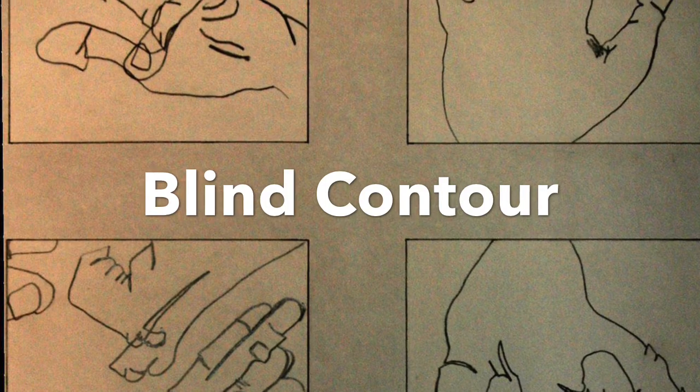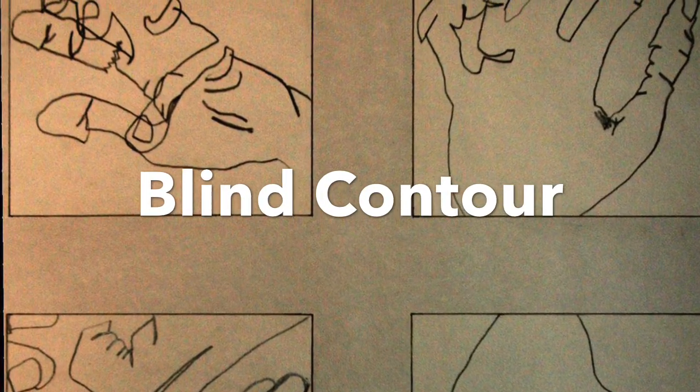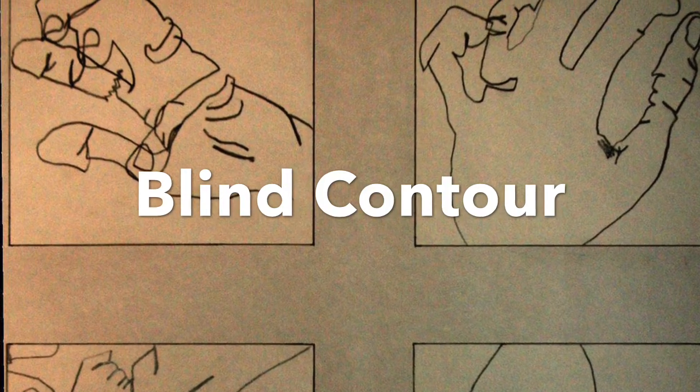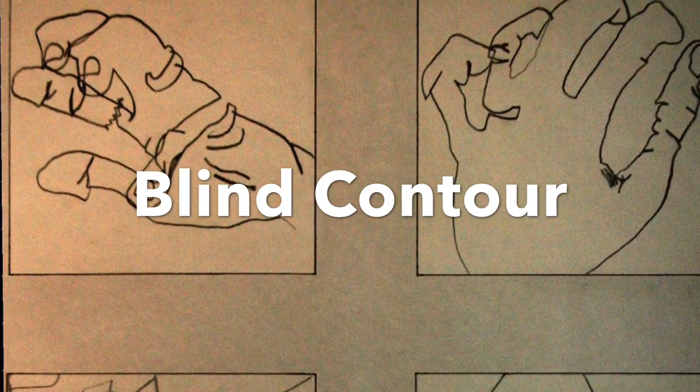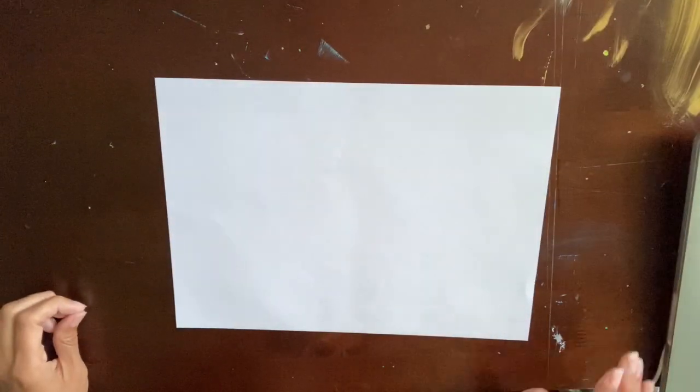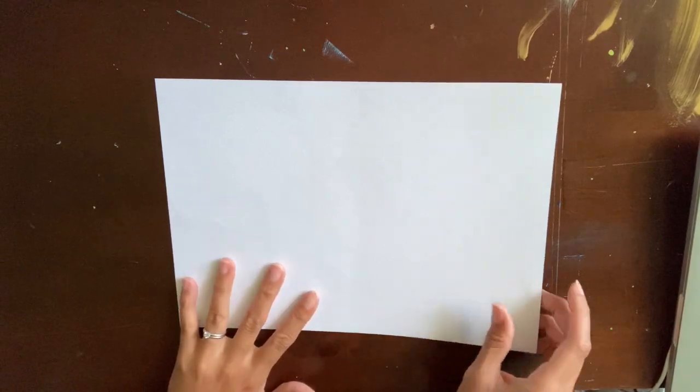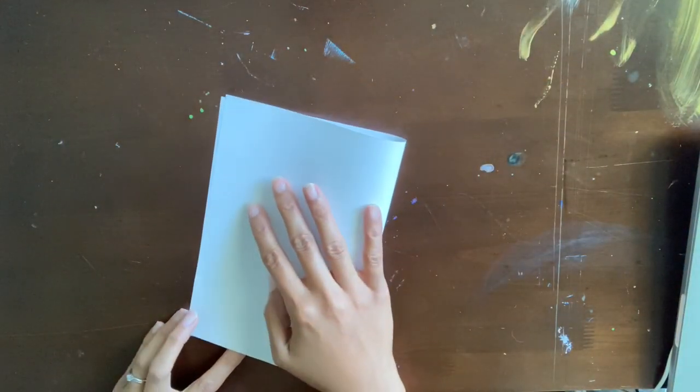So we're going to be doing a type of drawing called a blind contour and what it is is that you're going to be only looking at the object and not looking at your paper. So let me show you what that looks like. If you don't have a paper in front of you please pause now because we're going to need a piece of paper that we're going to fold into fours.